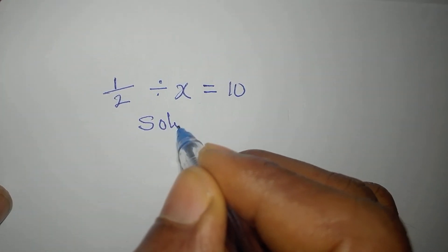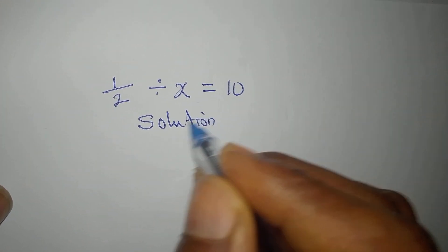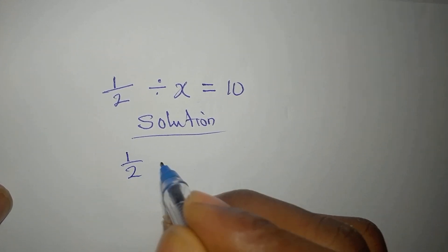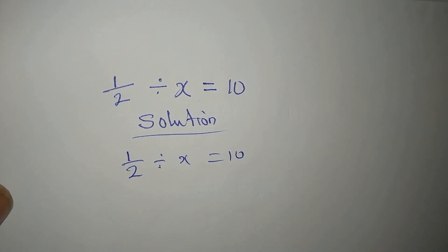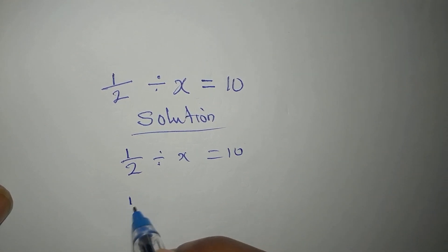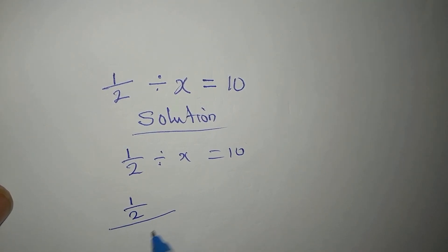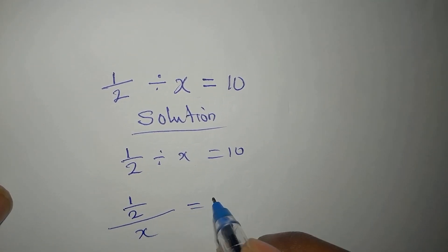Hi everyone, let's solve this problem quickly. One over two divided by x equals ten. So this means that we have one over two divided by x and is equal to ten.